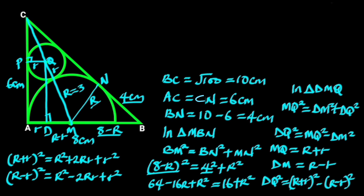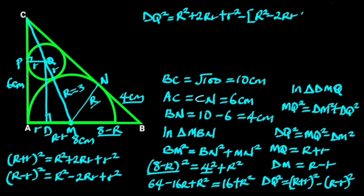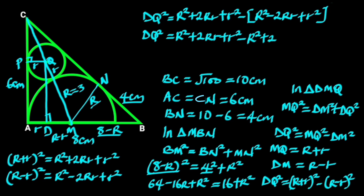Substituting these values gives us DQ² equals R² plus 2Rr plus r² minus (R² minus 2Rr plus r²). R² minus R² cancels out, r² minus r² also cancels out, and 2Rr plus 2Rr is 4Rr. So DQ² equals 4Rr.